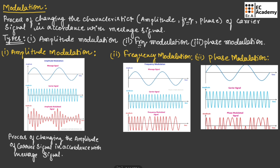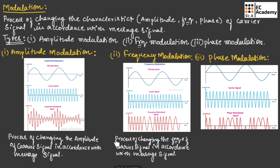Now let us define frequency modulation. Frequency modulation is the process of changing the frequency of the carrier signal in accordance with the message signal. Here, the frequency of the carrier signal is changed with respect to the message signal. As you can see, for the positive half of the message signal we have high frequency, and for the negative half of the message signal we have low frequency — again high frequency and low frequency. So the frequency of the carrier signal is varied with respect to the message signal. This type of modulation is known as frequency modulation.